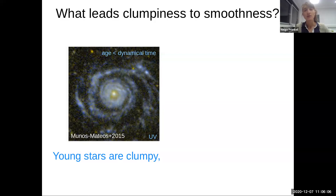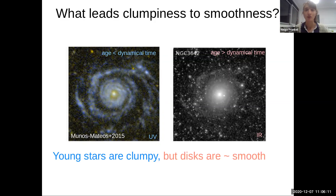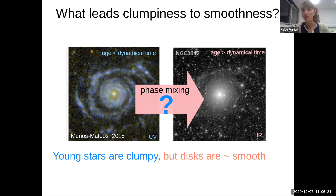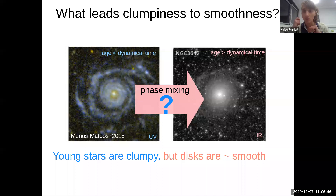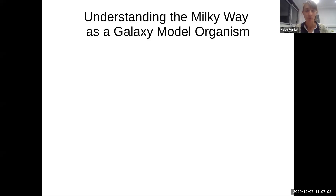If you take a picture of a disk galaxy in the UV where the light traces the young stars, you see that it's very clumpy and very structured. If you do the same exercise in the infrared where the light traces the overall mass distribution, you see something that looks much smoother. The question is: how do you go from clumpy star formation to a globally smooth profile? One thing we know is that there is phase mixing — stars mix in radius and azimuth after a few dynamical timescales. And the question is, is there anything else?